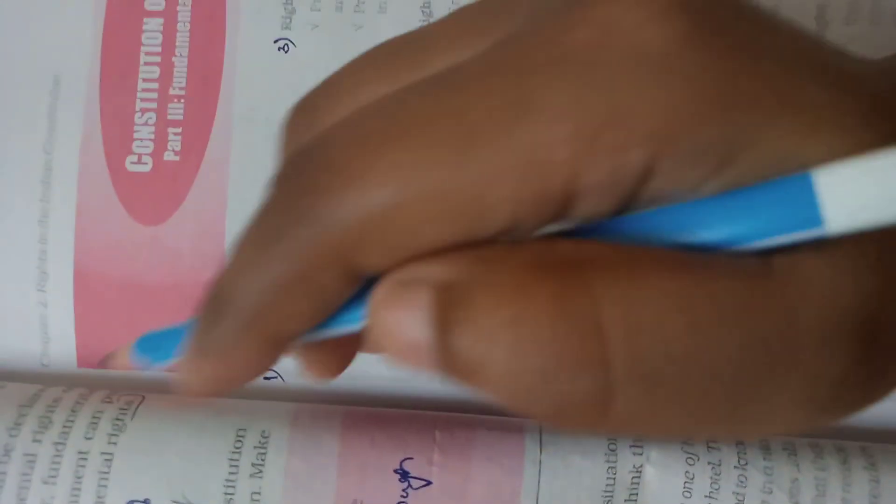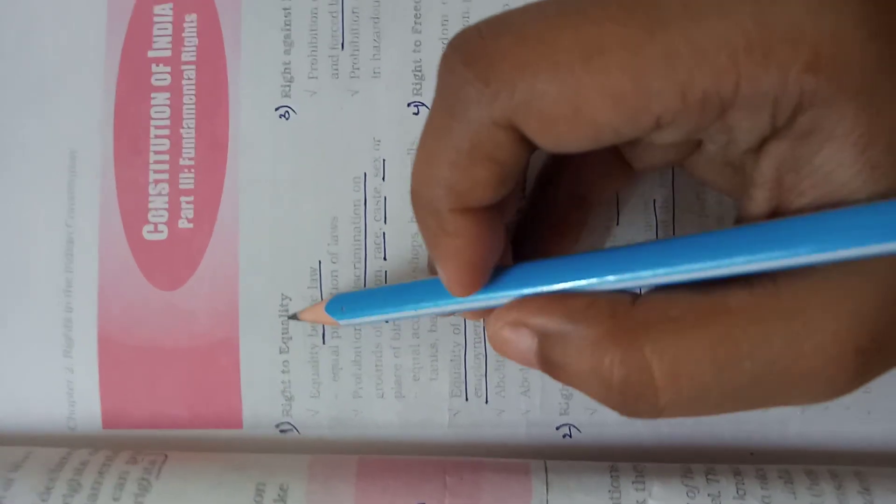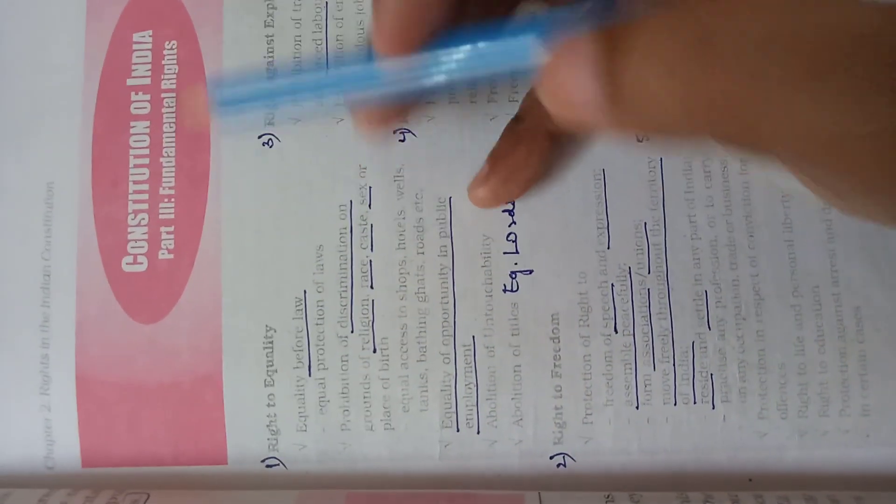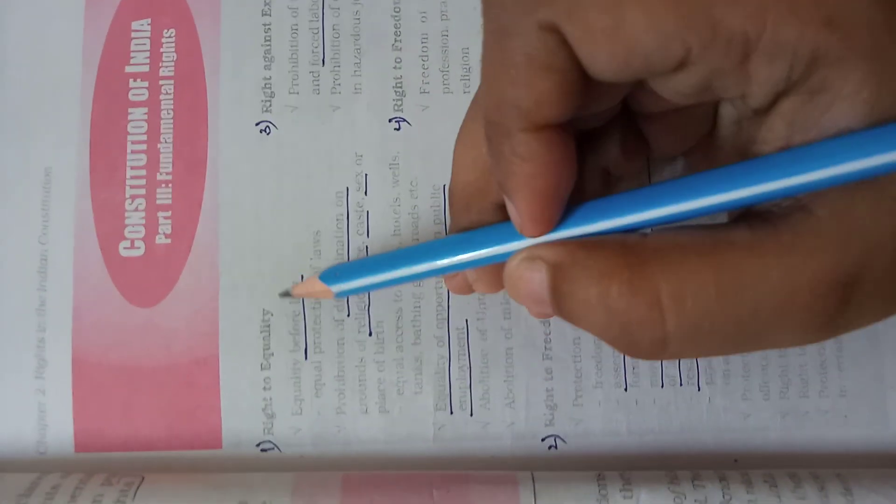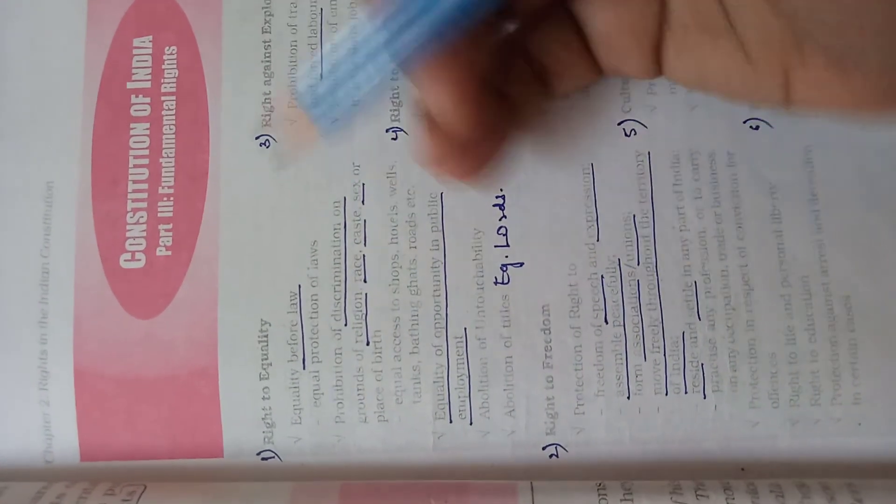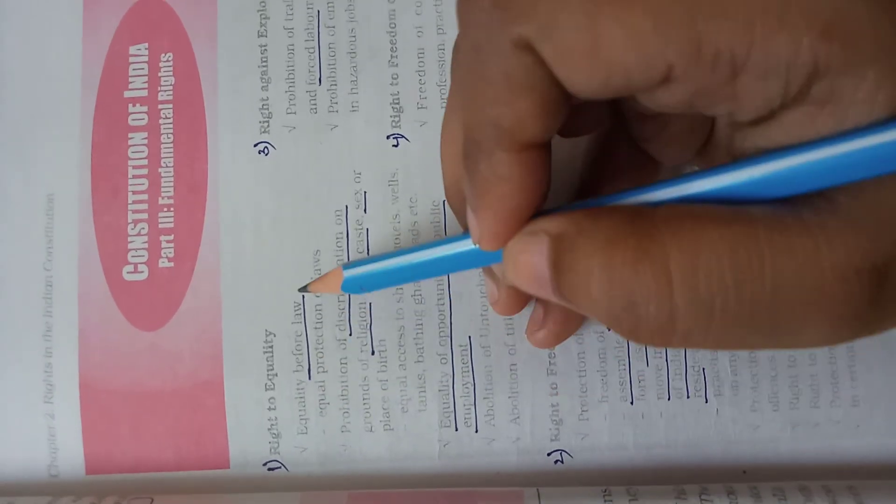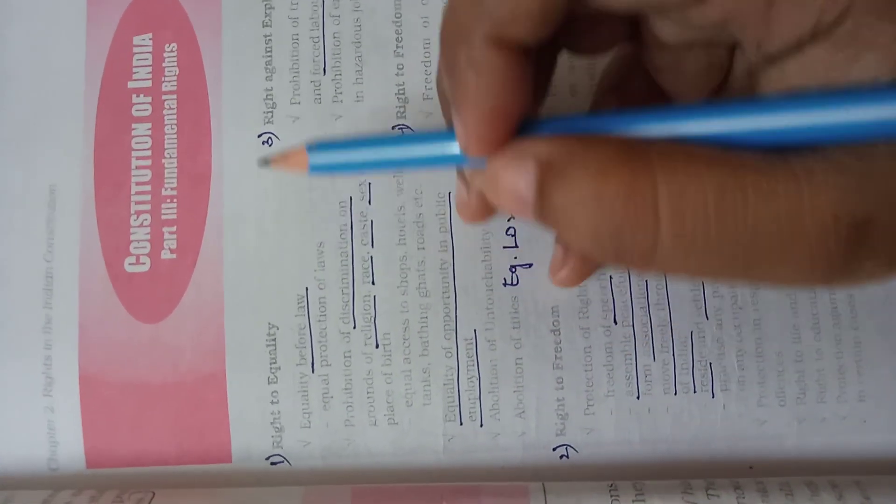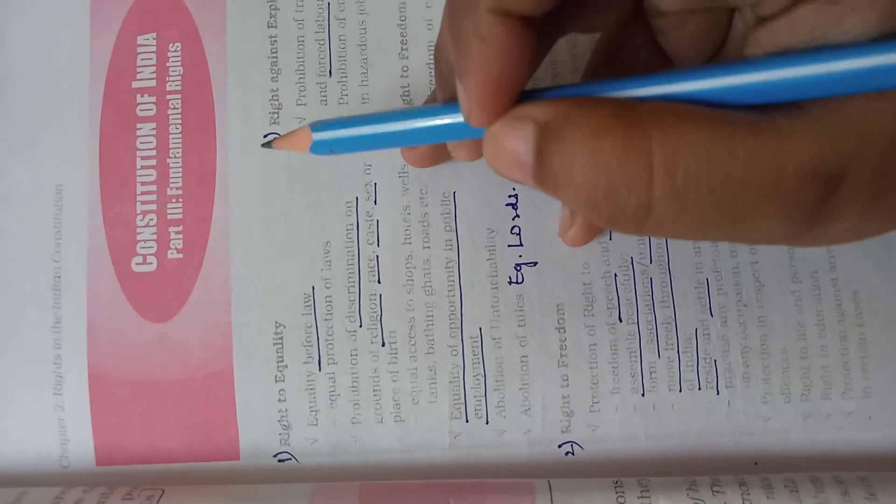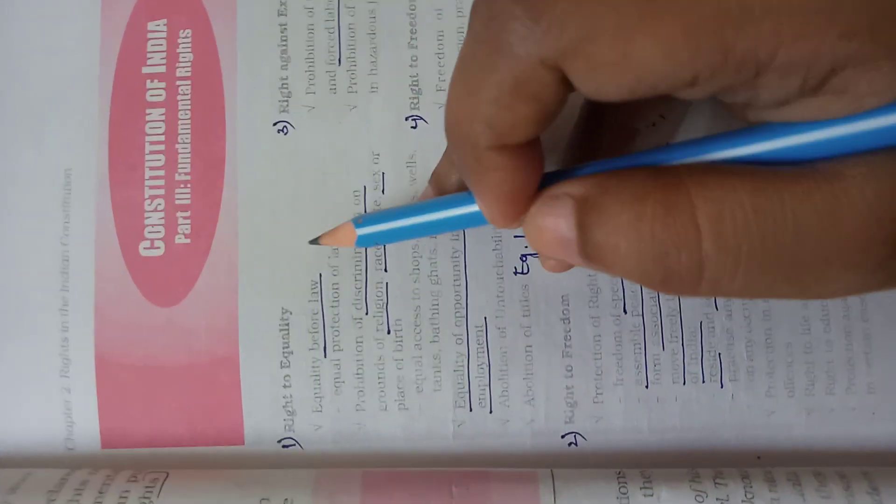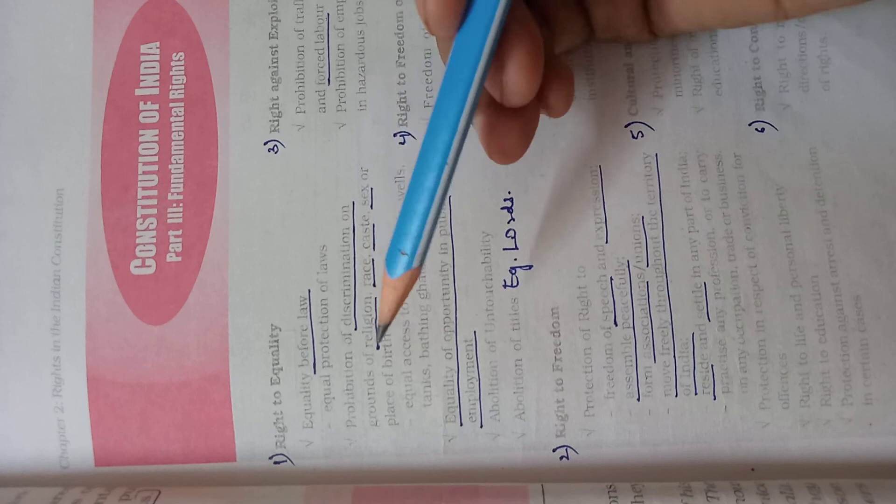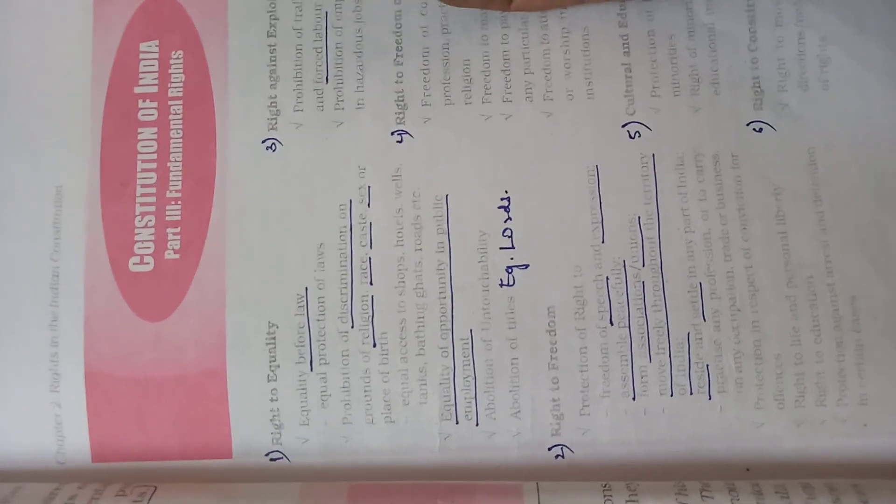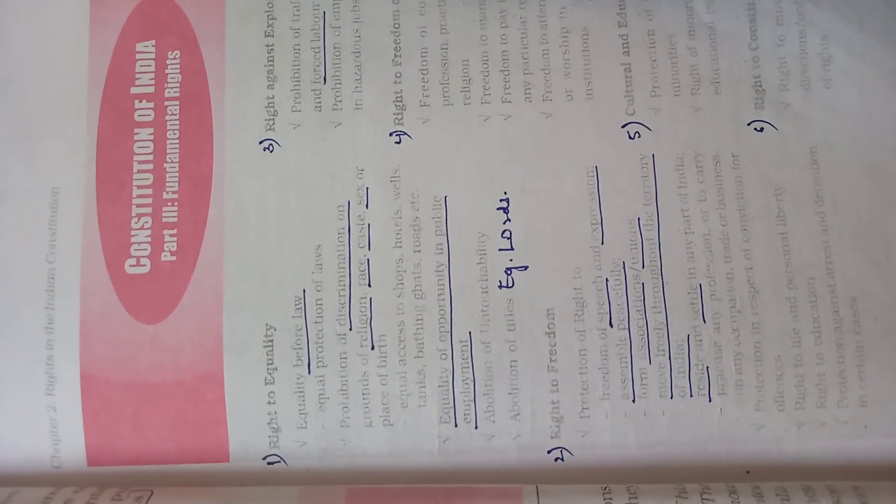Now let us understand, after reading these two examples, what the Constitution of India guarantees under fundamental rights in Part 3 according to right to equality. Equality before law. That means everybody is equal before law. Even if Salman Khan is doing a certain kind of crime, he has to go behind bars. Even if a normal person is doing a crime, he too has to go behind bars.